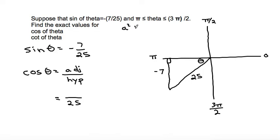So a squared plus b squared is equal to c squared, where c is the hypotenuse. So this would be negative 7 squared plus b squared is equal to 25 squared.